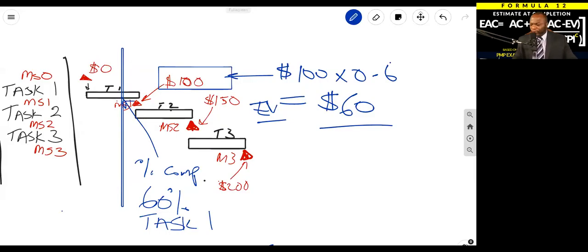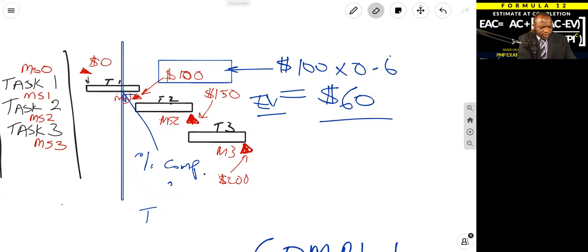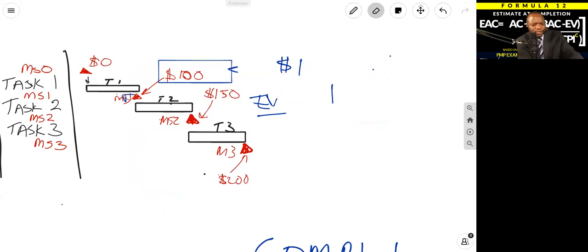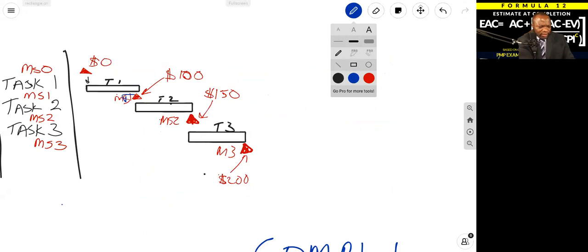But anyway, going back to our view here, let me give you one more example. So that's an example for the first milestone. If you are proceeding on the project and at a different point in time, you wanted to compute earned value based on certain statuses, you would do something like this.